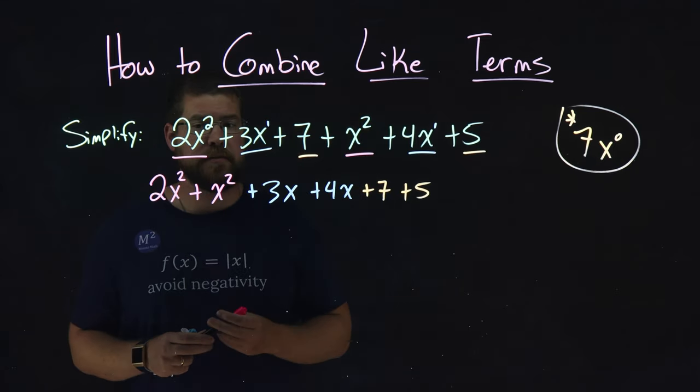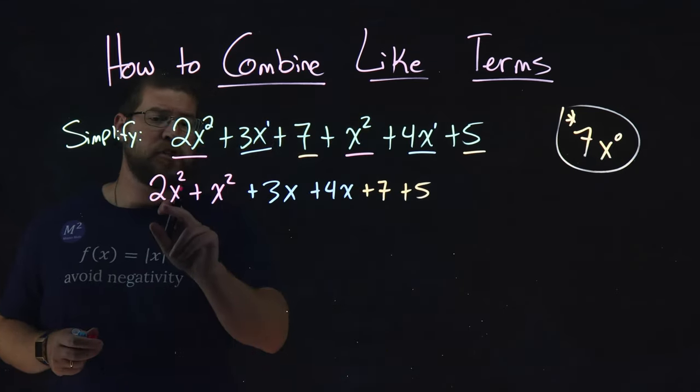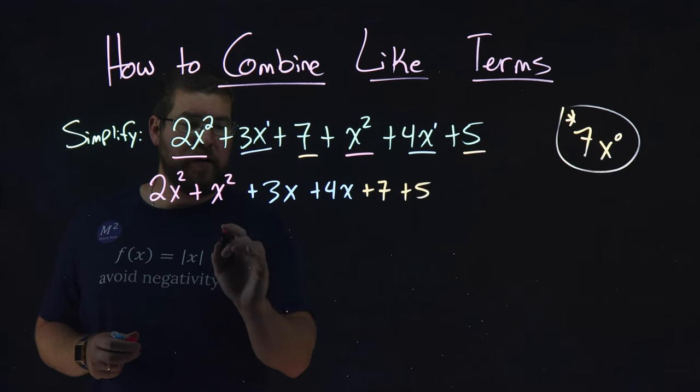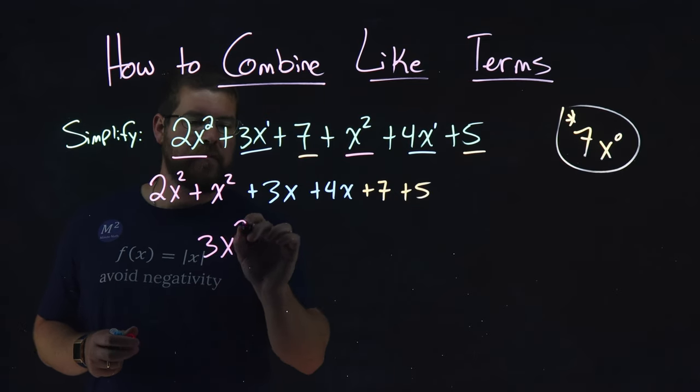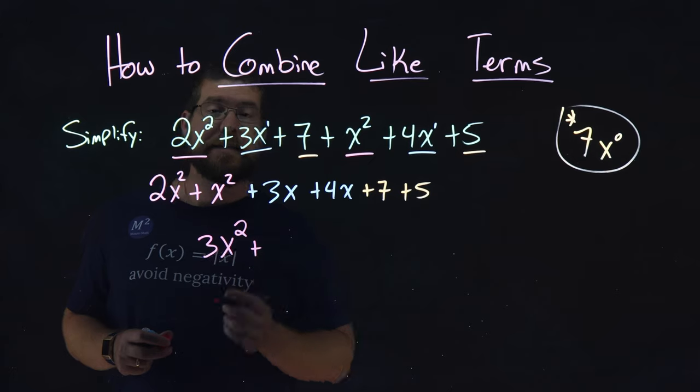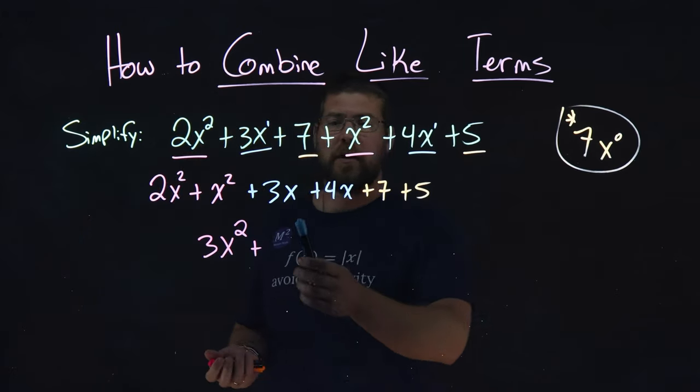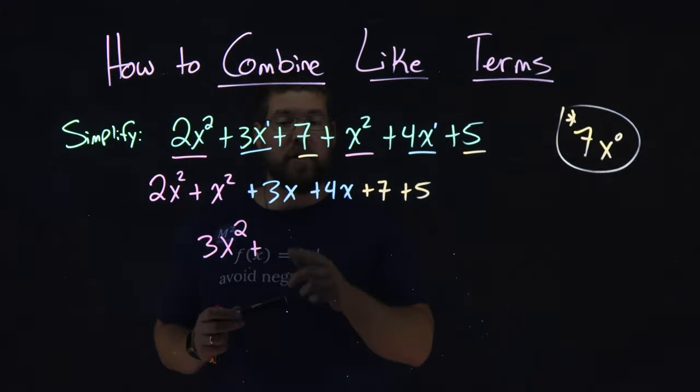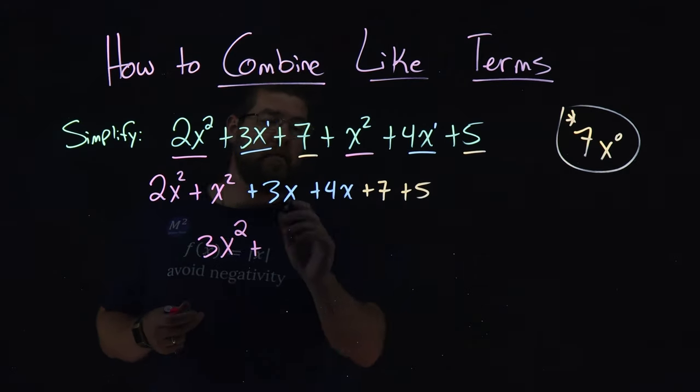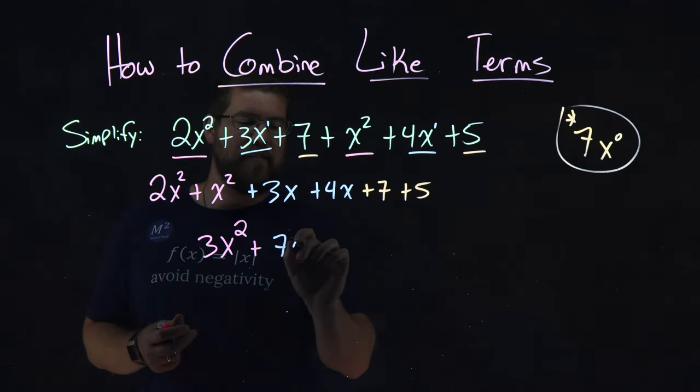It's pretty easy to combine our like terms. Let's start with the first one. 2x squared plus 1x squared is 3x squared. Next we have 3x plus 4x. We're looking at the coefficients again. 3x plus 4x is 7x.